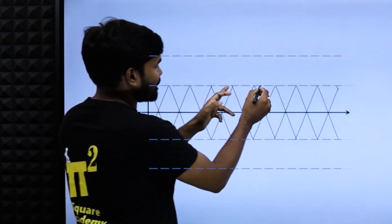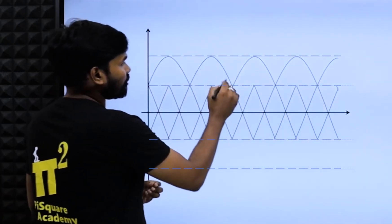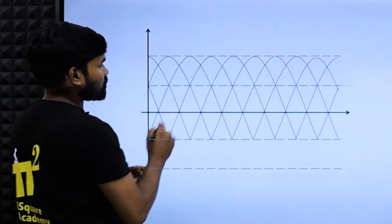Every alternate points, alternate peaks I am just joining with a curve and rest of the points also I am joining with a curve.